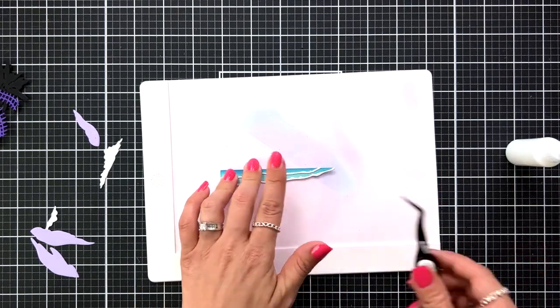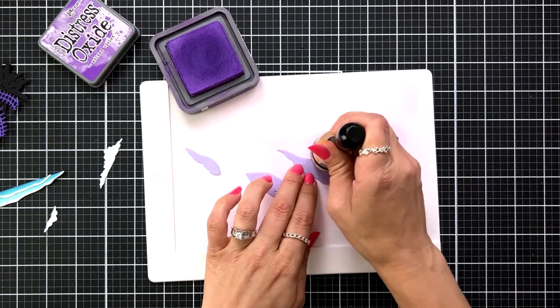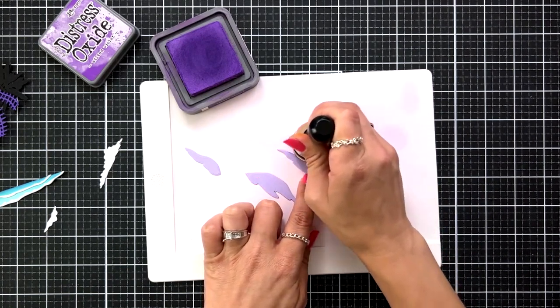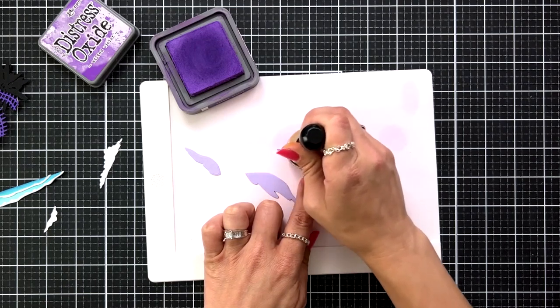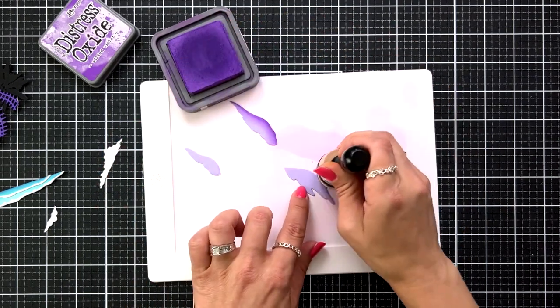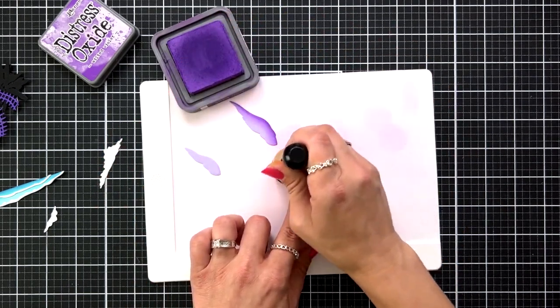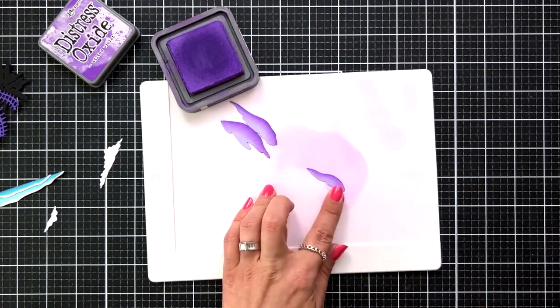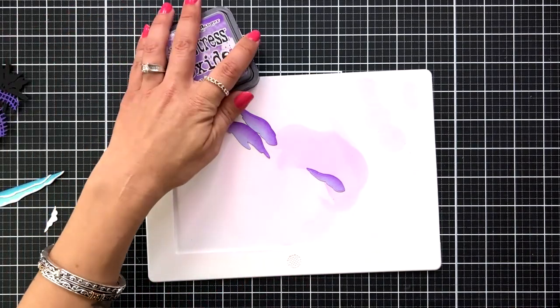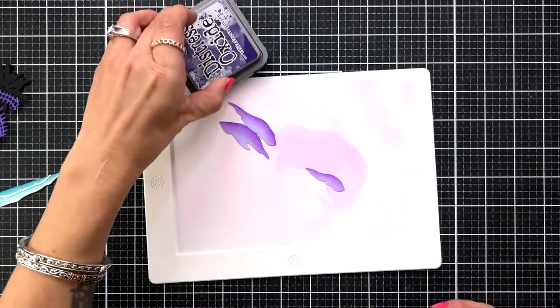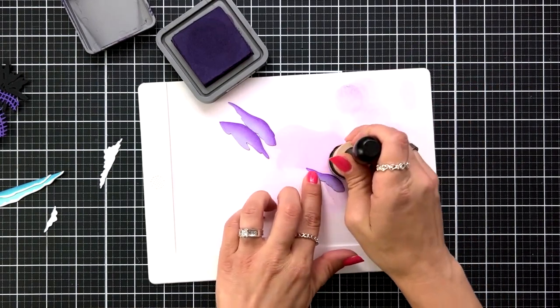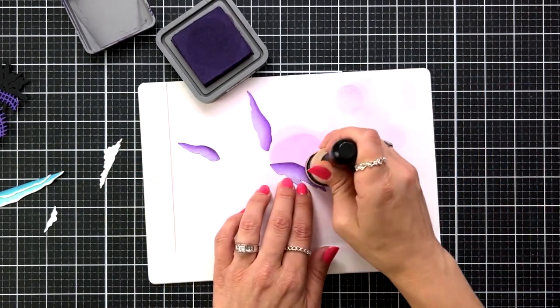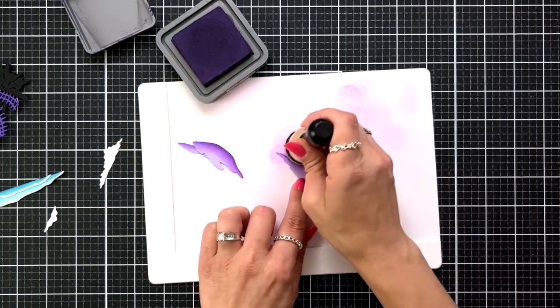I'm going to bring in my sand dunes and start adding some color to those. For this one, I'm using wilted violet, just very lightly going from the top. I'm not coloring in the whole thing. I wanted to show that transition of color from the light cardstock to that ink blending and just apply that to all three of the sand dunes. Then I'm going to bring in villainous potion, that really dark purple, and just add a very smidge to the top. I'll set these off on the side and start working on my background.